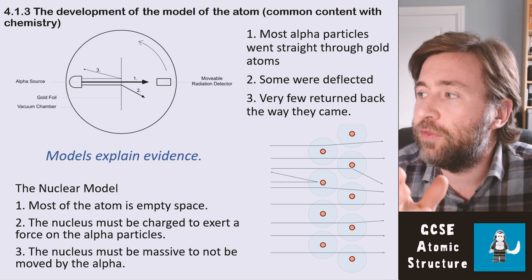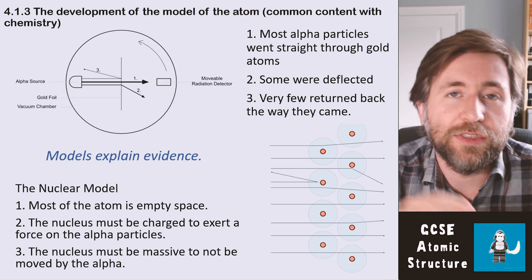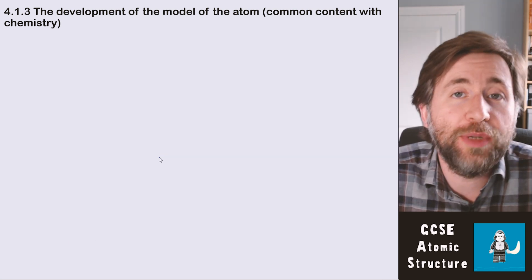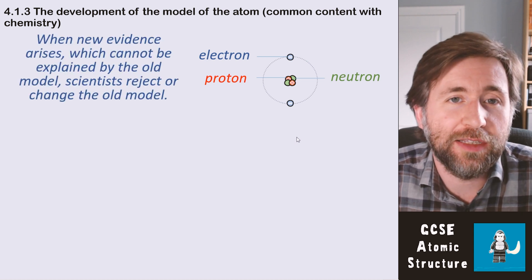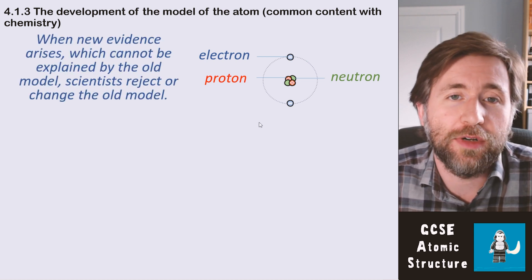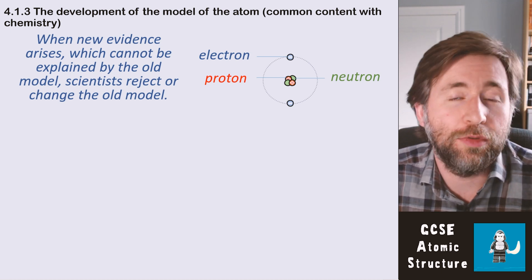I would strongly recommend that you memorize those observations and those conclusions about Rutherford's alpha particle scattering experiment. A really core bit of information about how we arrived at this model, this way of explaining the atom, is that when new evidence arises which can't be explained by the old model, we have to reject or change the old model. Scientists change the models based on the evidence that they have.